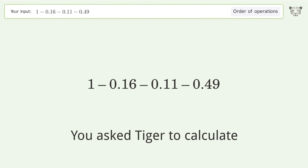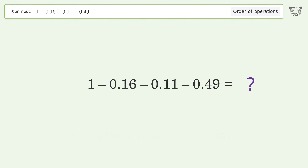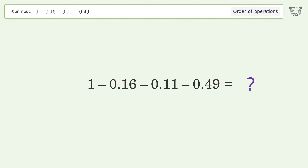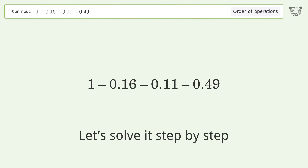You asked Tiger to calculate. This deals with the order of operations. The final result is 0.24. Let's solve it step by step.